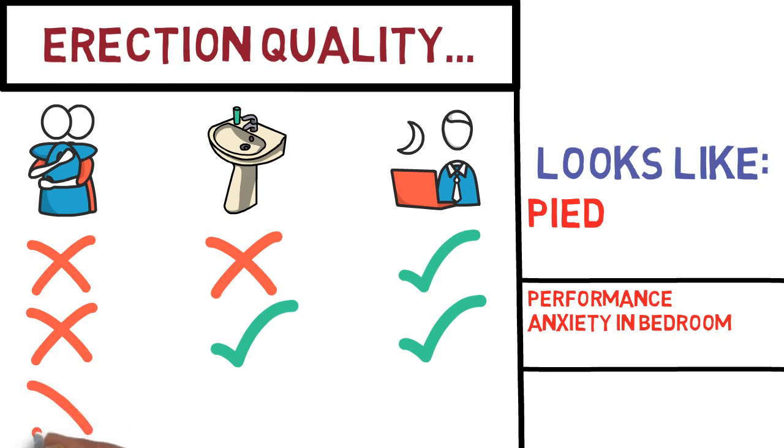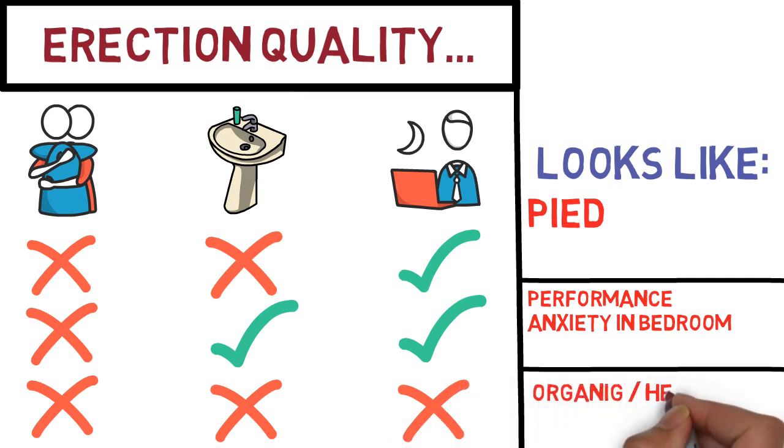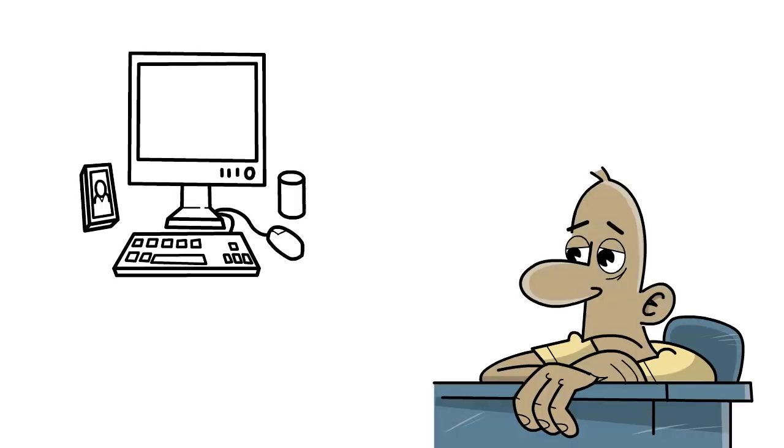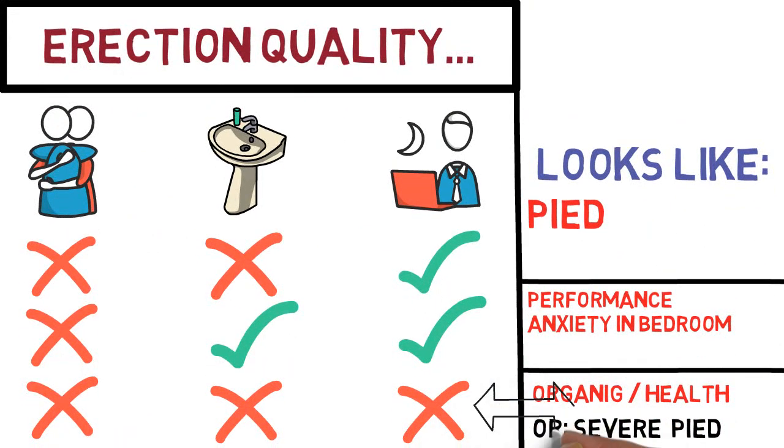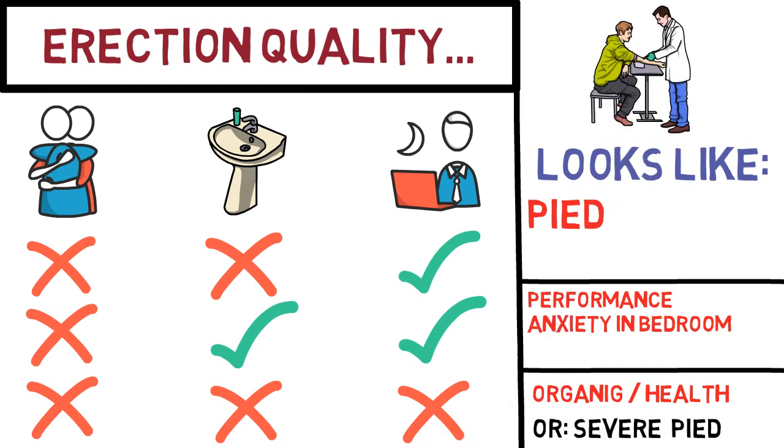Now, what if you can't get hard in any of these three cases? Well, then it looks more like an organic problem. Like for example clogged arteries, severe depression or some other health problems. Or, then it could also be severe porn-induced ED. You see, some guys develop such a degree of desensitization that not even porn can turn them on any longer. Now, with this one here, you should definitely see a doctor to see if you can rule out any serious health conditions.